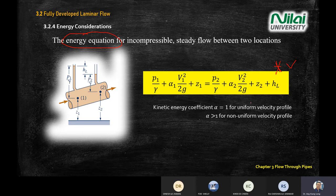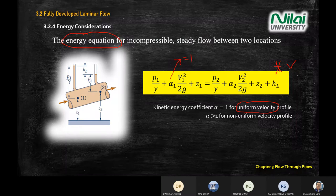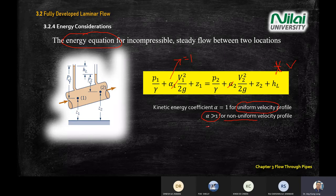If you're having a uniform flow — which is normal for this module — when you see 'uniform velocity' mentioned in the question, your alpha equals one. So alpha 1 equals one and alpha 2 equals one. However, when you have non-uniform flow, your alpha will be more than one, and this value can be determined from experiment.